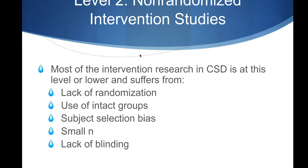There's subject selection bias — maybe the first people that showed up are in group one and the people on the waiting list are in group two. There's a small number of participants and a lack of blinding, because in speech therapy the therapists are going to know they're giving therapy and the clients will know they're getting therapy. There are ways to fix that, like we talked about a little bit in the last lecture.